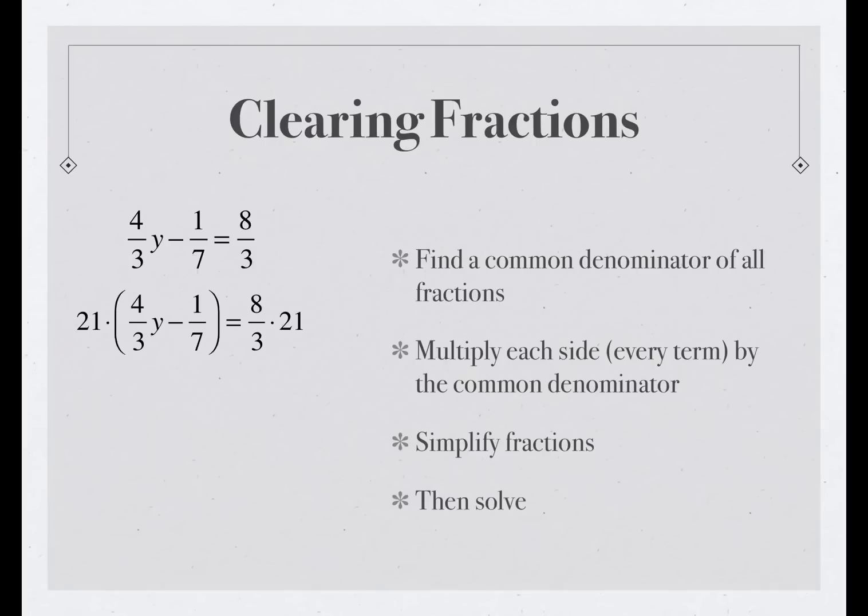So here's the multiplication. We have 21 times (4/3)y - 1/7, that's the left side, equals 8/3 times 21, which is the right side. Now we expand the left side to 21 times (4/3)y minus 21 times 1/7, equals 8 times 21 over 3.